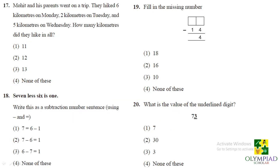So next question Mohit and his parents were on a trip. They hiked 6 kilometers on Monday, 2 kilometers on Tuesday and 5 kilometers on Wednesday. How many kilometers did they hike in all? So in all means you have to add all the numbers that is 6 plus 2 plus 5 which is 6 plus 2, 8 plus 5 is 13. So they hiked 13 kilometers in all.